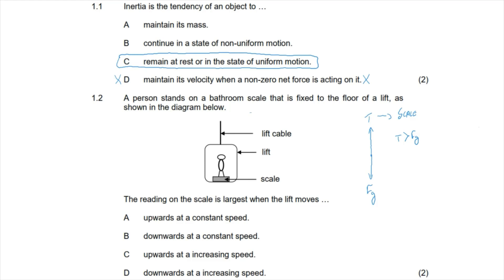To make the tension force as large as possible, the scale must be accelerating upwards, because that means the net force is greater than zero and the tension force is greater than the force of gravity. So the reading on the scale is largest when the lift moves upward at an increasing speed — that is, at an increasing velocity or acceleration.